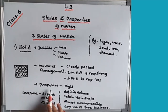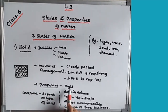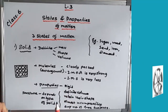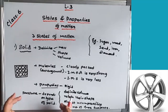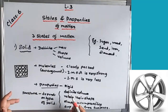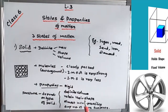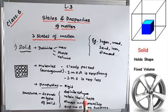Now we will talk about the properties. Solids are very rigid — rigid means very tight and packed, as you can see from the molecular arrangement. They cannot be easily broken into any desired shape. Next is definite volume — it will occupy the same space wherever you keep it.